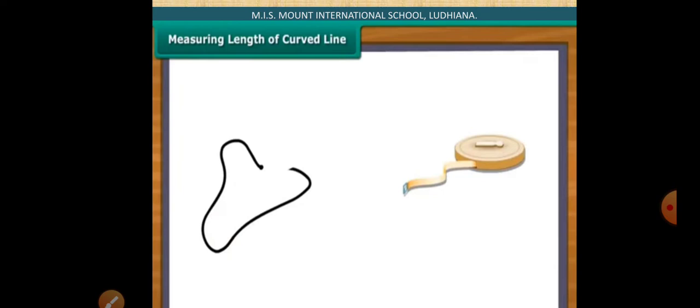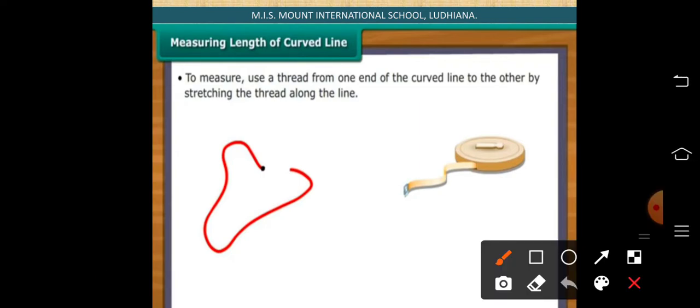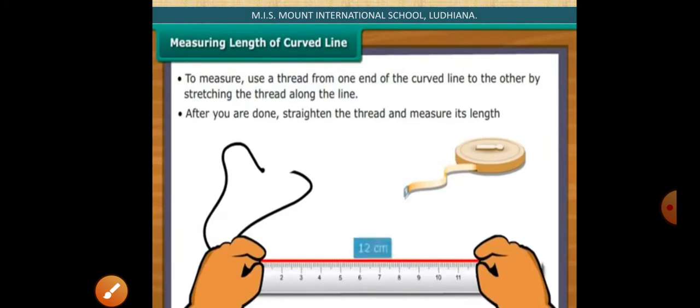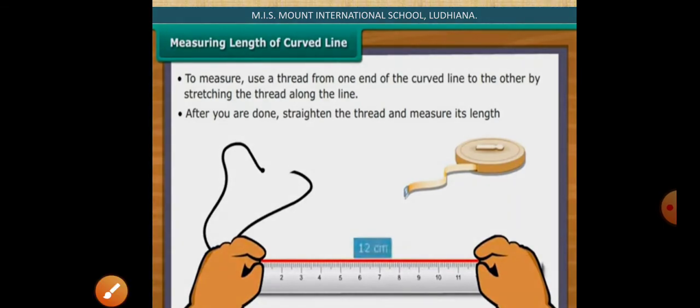This can be more accurately understood by taking this example: if you want to measure the length of a curved line, will you use this type of meter scale? No. So how will you measure its length? First, you have to tie a thread along the length of the curve. Then stretch the thread and measure it on the scale. This will give you the exact measure of the length.